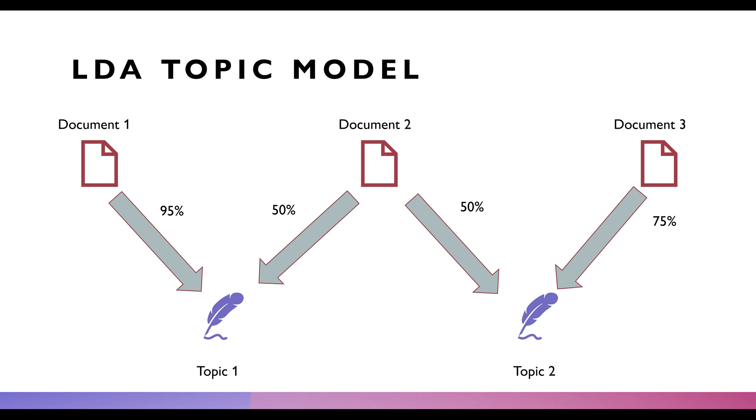This is what an LDA model does. It identifies if a document has multiple topics within it. These topics are latent, hence the L in LDA. What we're trying to do with LDA topic modeling is use unsupervised machine learning to generate a number of topics, in this case two, and see the proportion to which a document fits into each of these topics.